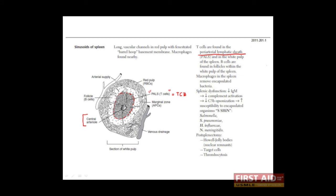Periarterial because it's around or close to the central arterial. Lymphatic because these are lymphocytes, namely T lymphocytes. And sheath because these T lymphocytes form a kind of sheath or covering around the central arterial.